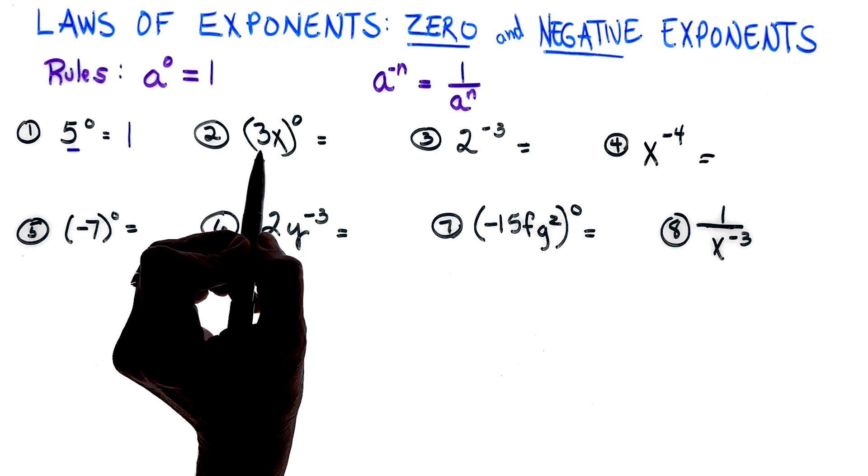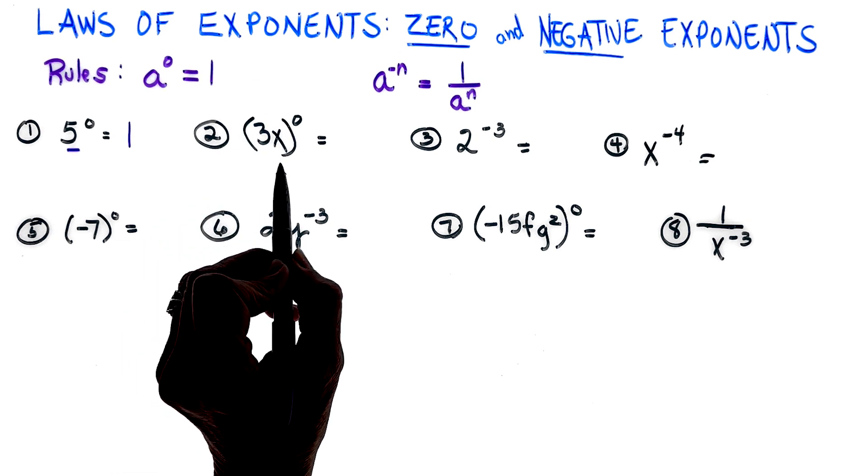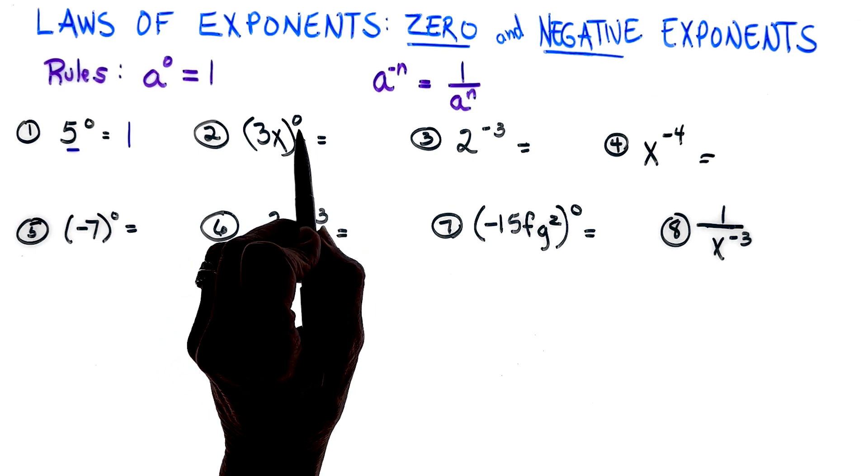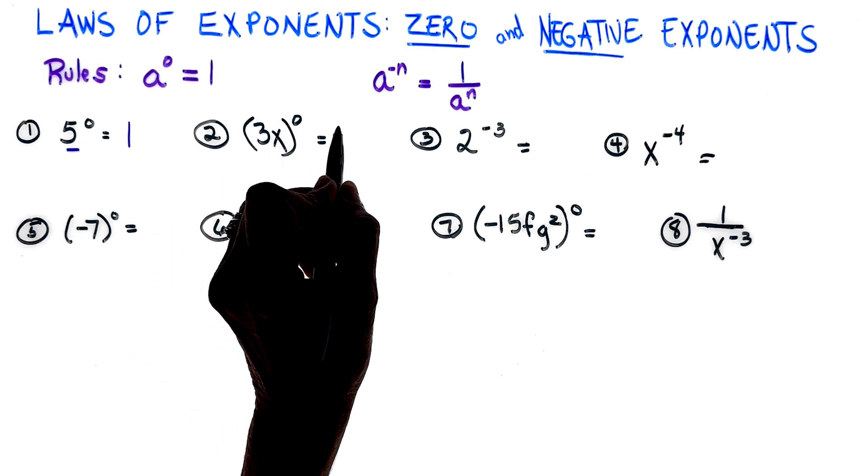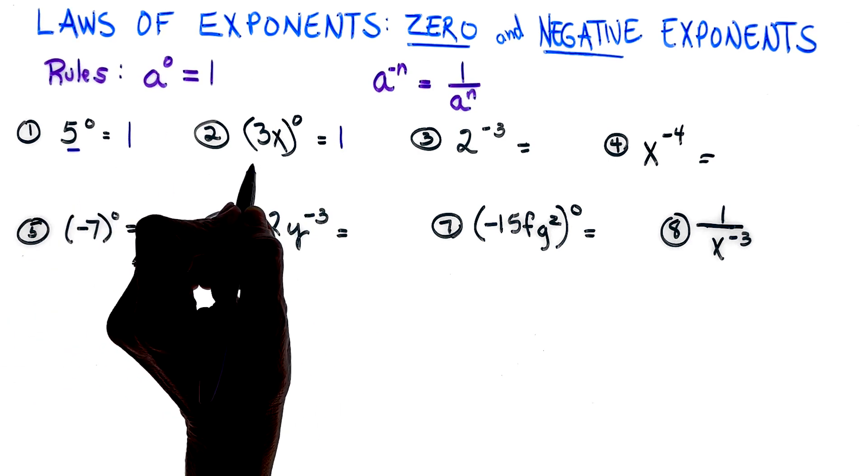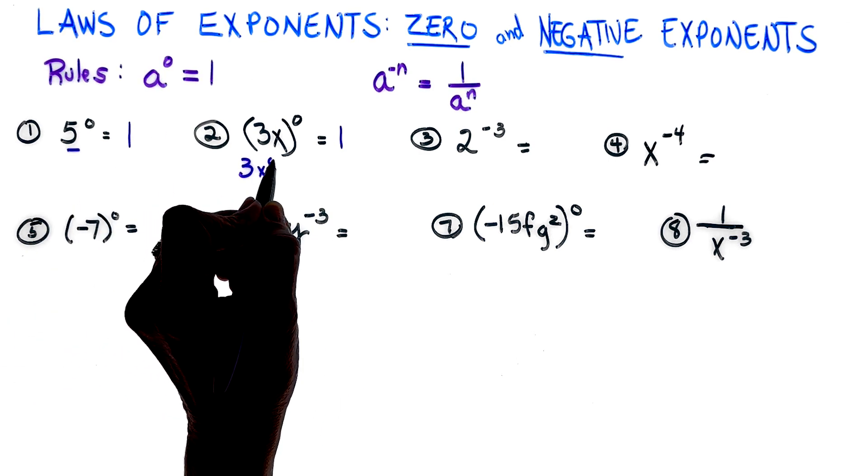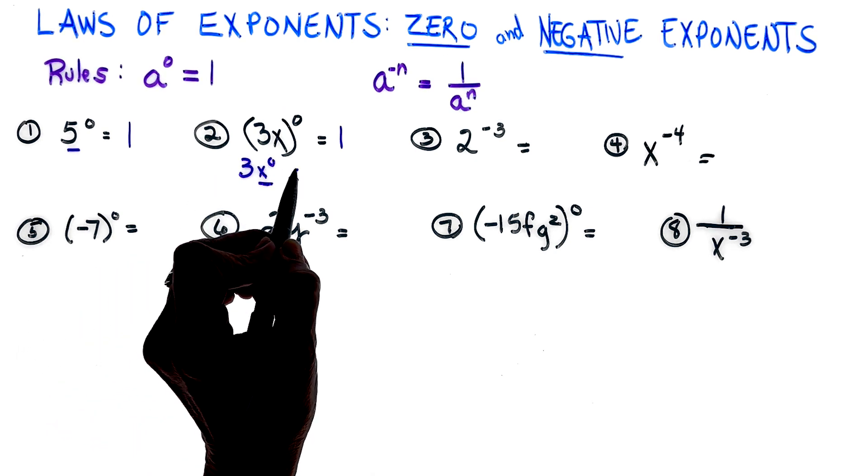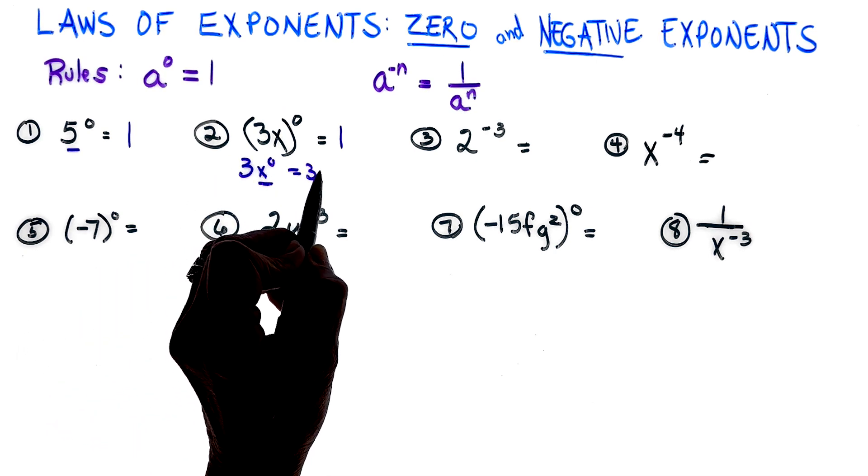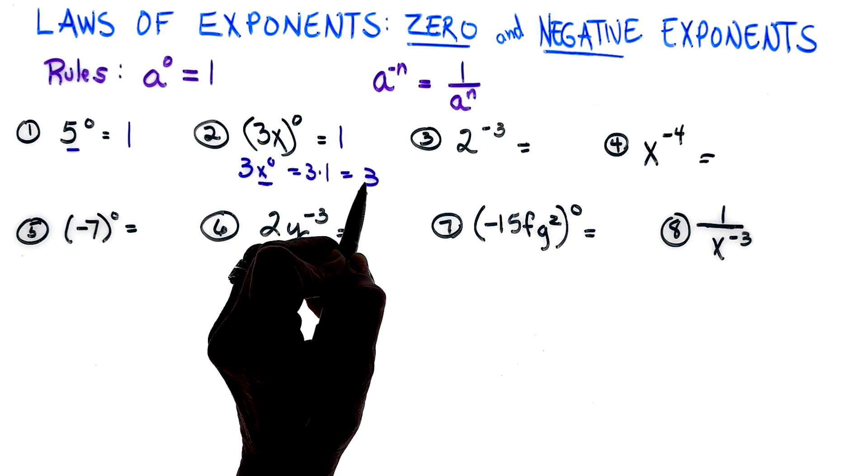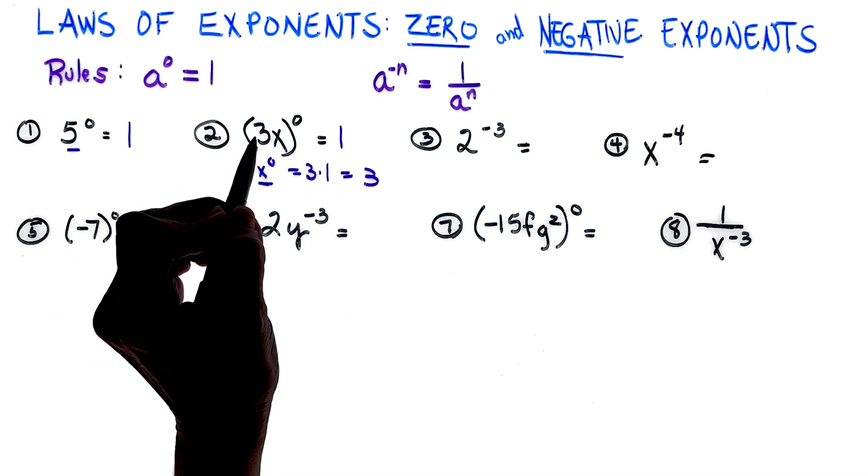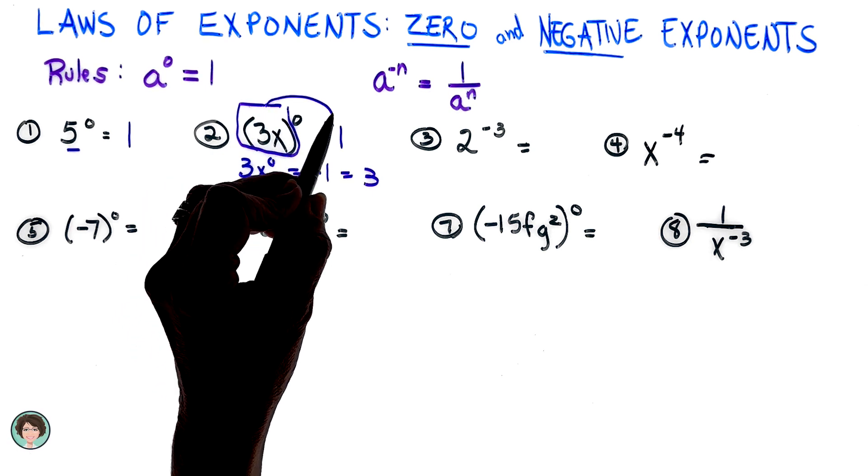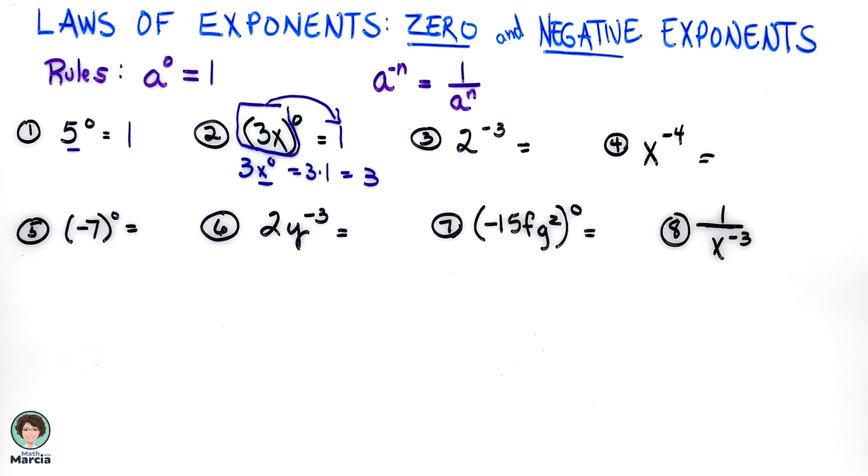Notice it's important that you have the whole thing in parentheses: three x to the zero power—all of that is equal to one. If it was written like this, that just means x is to the zero power, so that's the same as saying three times one equals three. The parentheses are very important to pay attention to.